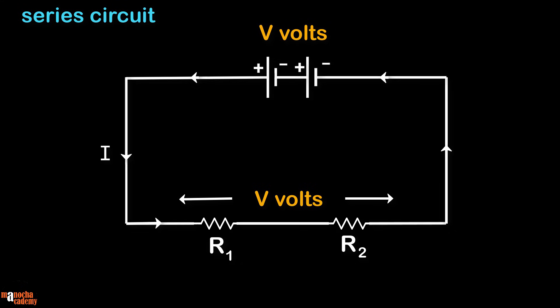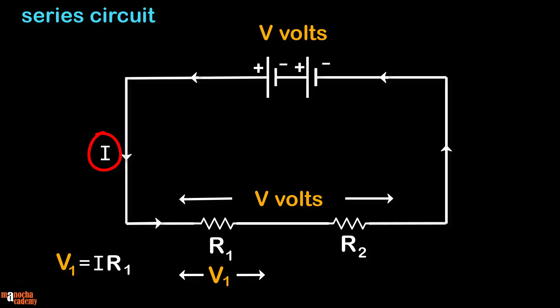This point connected to the positive terminal is at V volts and the point connected to the negative terminal is at 0 volts. So the potential difference across the entire series combination is V minus 0, which equals V volts. Let V1 be the potential difference across resistor R1. Using Ohm's law, V1 equals I×R1. Since the current I1 in R1 equals I, the main current, we get V1 equal to I×R1. Similarly, the potential difference across R2 will be V2 equals I×R2. As you can see, V1 and V2 across the two resistors will be different — they are the same only if the two resistors are equal.